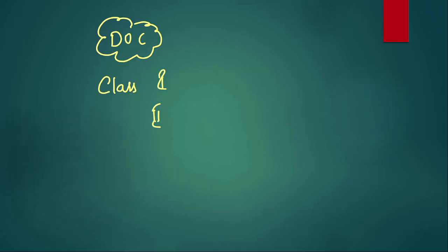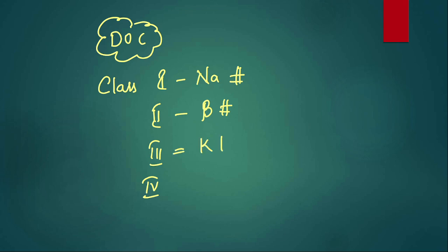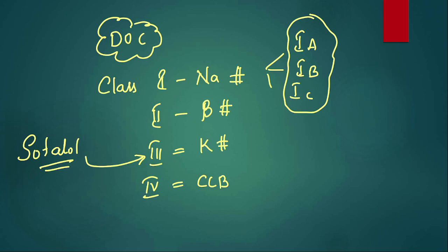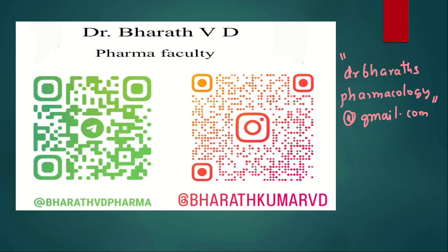In anti-arrhythmics, you need to remember various arrhythmias and their drug of choice. Classification: Class 1 = sodium channel blockers, Class 2 = beta blockers, Class 3 = potassium channel blockers, Class 4 = calcium channel blockers. Sotalol, even though a beta blocker, is placed under Class 3 because it also has potassium channel blocking property. Class 1 has subtypes 1A, 1B, and 1C. Tell me in the comment section which category — 1A, 1B, or 1C — lignocaine belongs to. Also study the adverse effects of amiodarone.